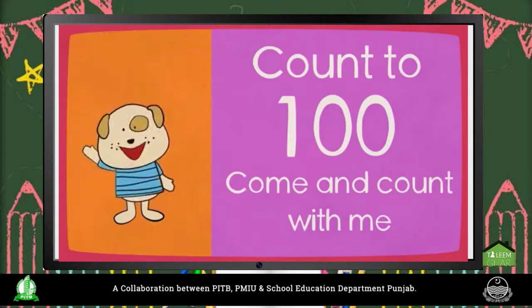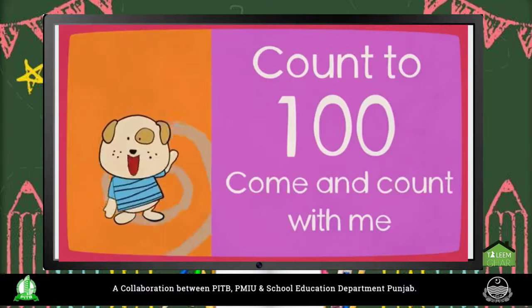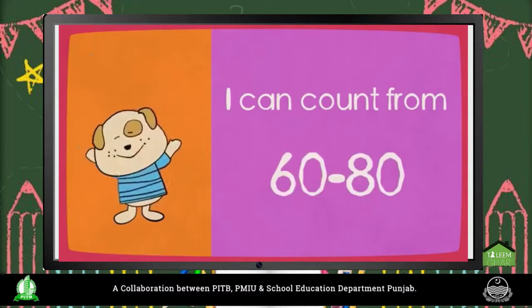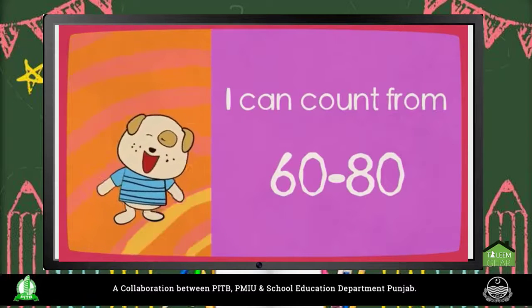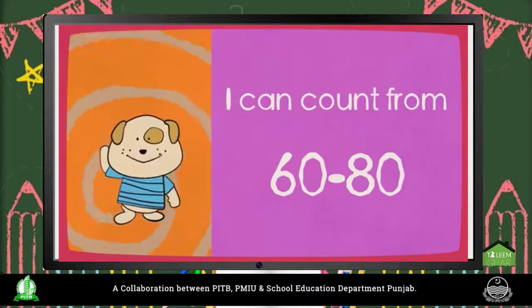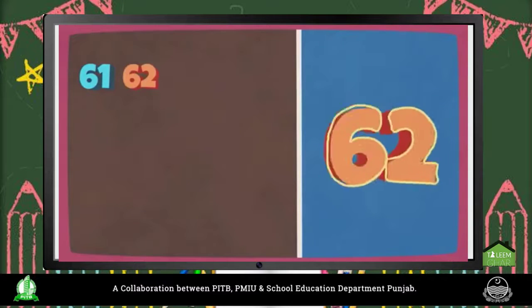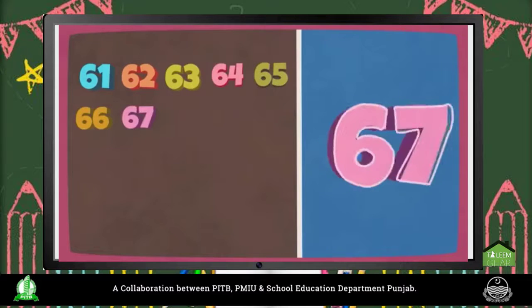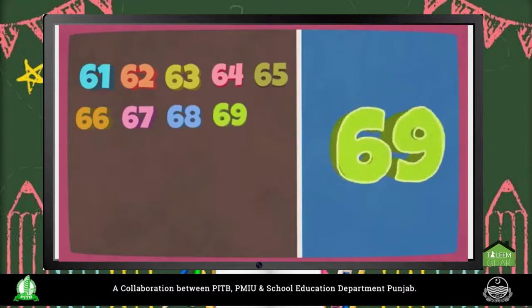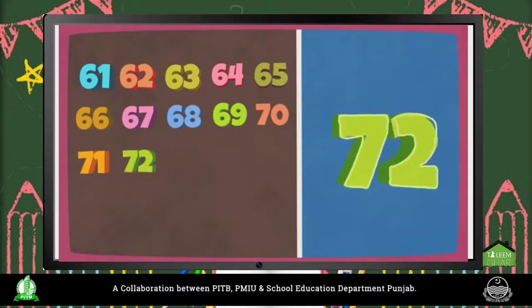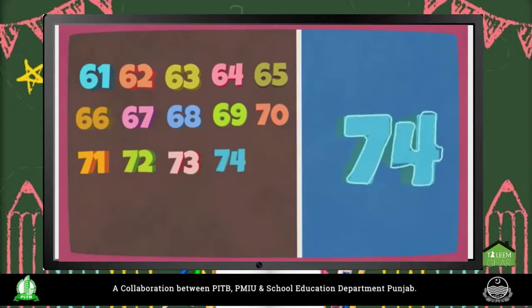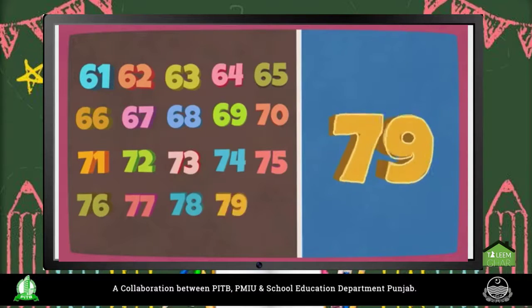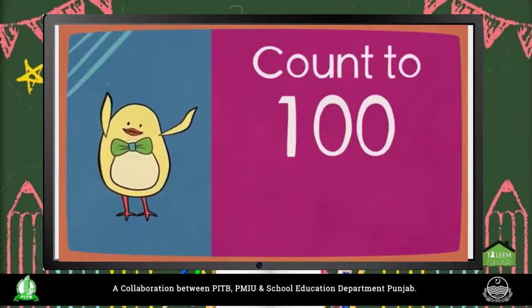Count to 100, come and count with me. I can count from 60 to 80. 61, 62, 63, 64, 65, 66, 67, 68, 69, 70, 71, 72, 73, 74, 75, 76, 77, 78, 79, 80.